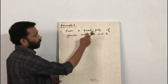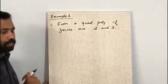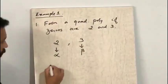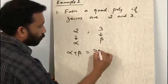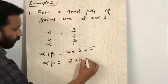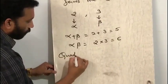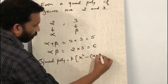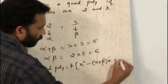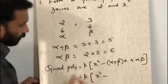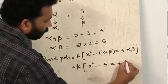Example 1: Form a quadratic polynomial if zeros are 2 and 3. Given the two zeros 2 and 3, let alpha equal 2 and beta equal 3. So alpha plus beta equals 2 plus 3, that is 5. Alpha beta equals 2 into 3, that is 6. The general format for the quadratic polynomial is k into x squared minus (alpha plus beta) into x plus alpha beta, that is minus 5 into x plus 6.